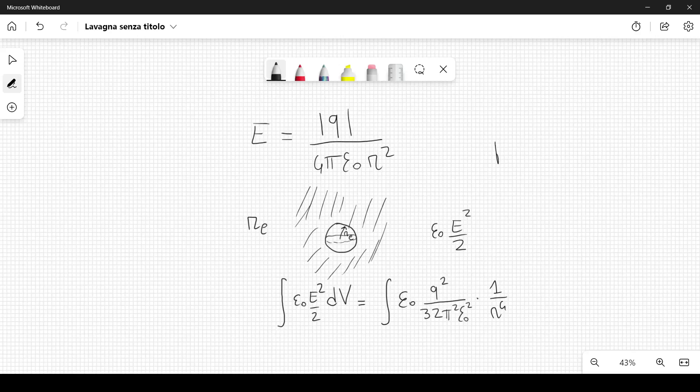And then the volume, the differential of the volume, we know that the sphere has a volume equal to 4 over 3 pi r cubed. So we can calculate the differential of this, which is 4 pi r squared dr.